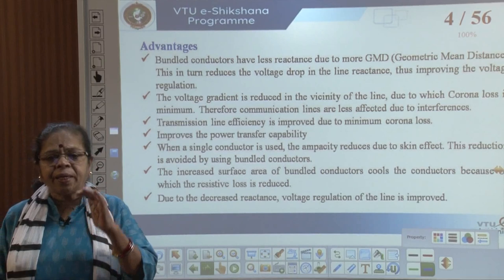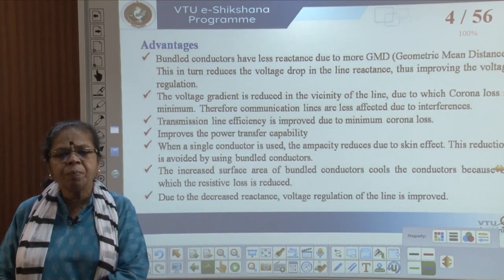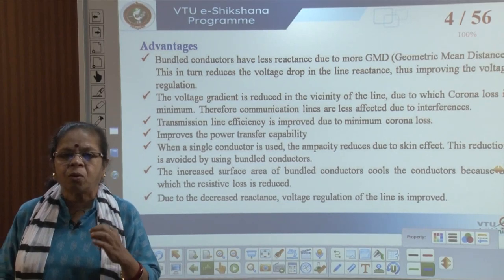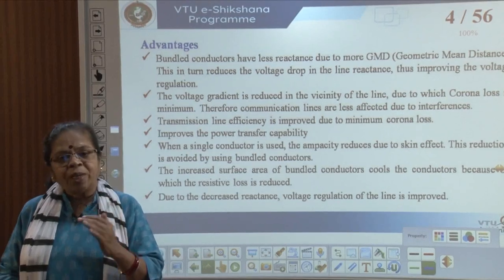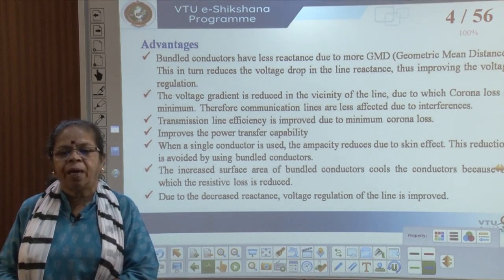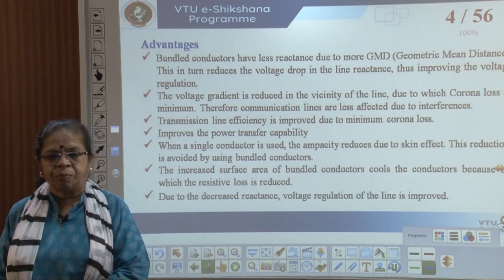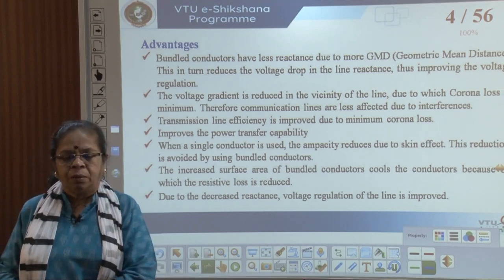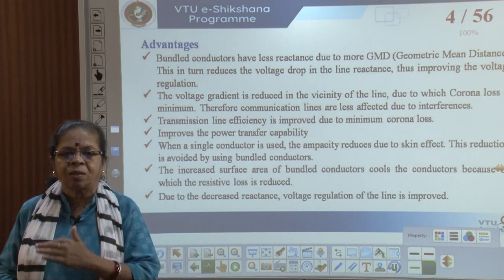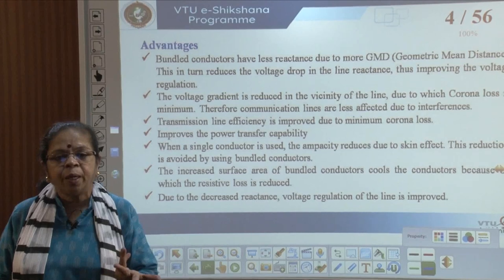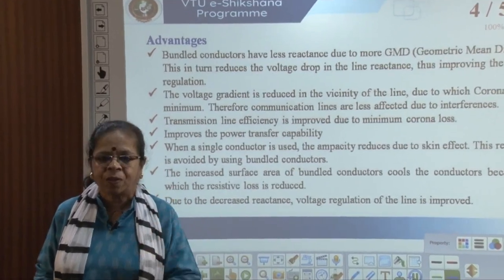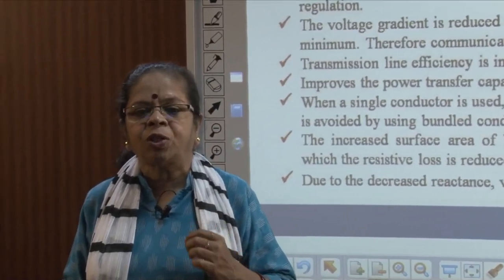The second advantage is that the voltage gradient is reduced in the vicinity of the line. Voltage gradient means voltage per centimeter. The breakdown of a material depends on the voltage gradient, so if the voltage gradient is reduced, there are lesser chances of breakdown of air, and therefore the problem of corona and interference with communication is reduced. Since corona reduces, the loss also reduces, the transmission efficiency improves, and the power transfer capability also increases.